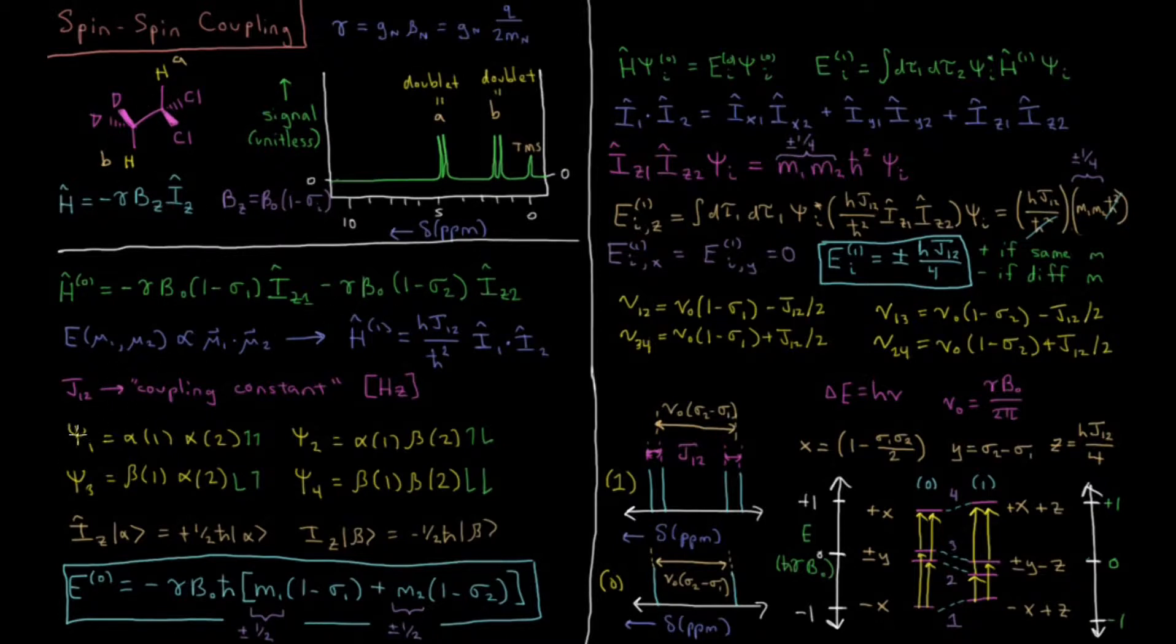So we can define a system here where we have four zero order wave functions, psi one, two, three, four. These are where we have alpha alpha, spin up, spin up, spin up, spin down, spin down, spin up, and finally beta beta, spin down, spin down, for nucleus one and nucleus two respectively.